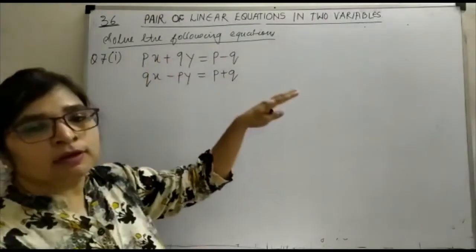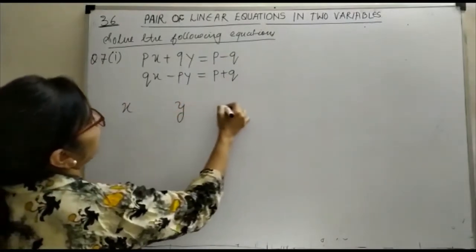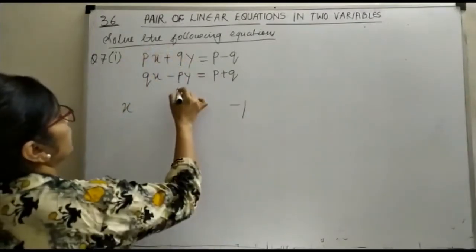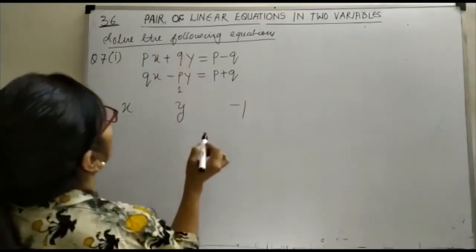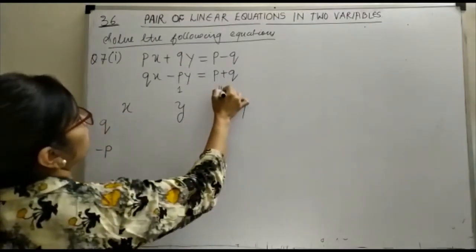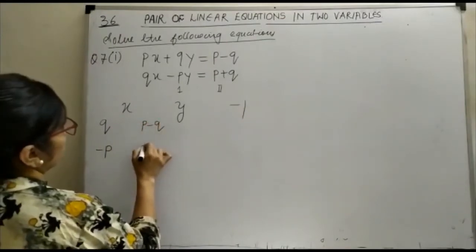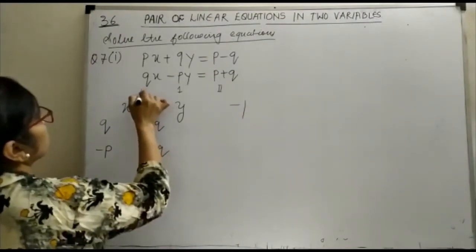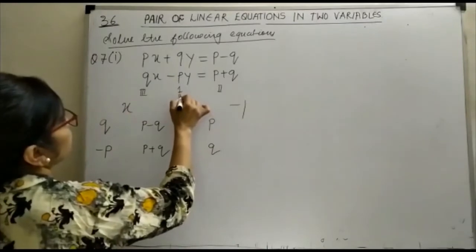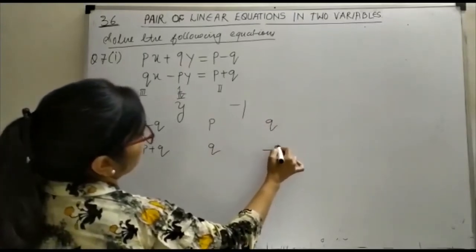So your constants are equal to the right-hand side, so you can take the format x, y, minus 1. Now as I told you, we will be writing the coefficient of y first. So this will be on the first position, so we are here with Q and minus P. The second position is for the right-hand side terms: P minus Q and P plus Q. The third position is for P and Q, and again the first position will be repeated as the fourth position, which gives Q and minus P.